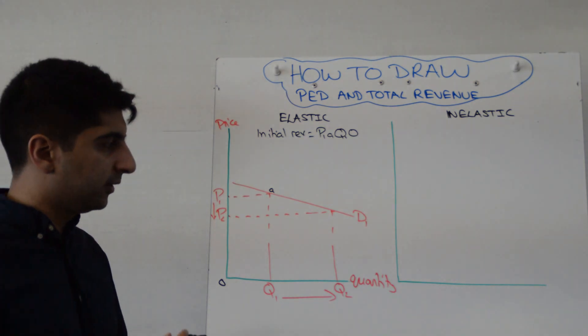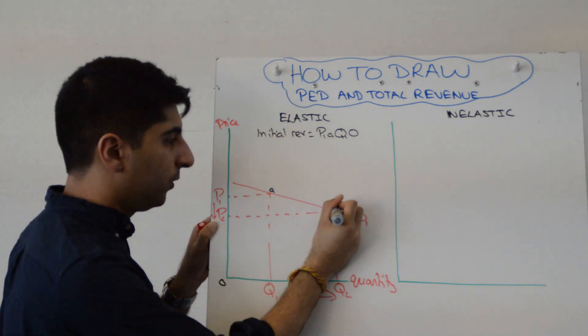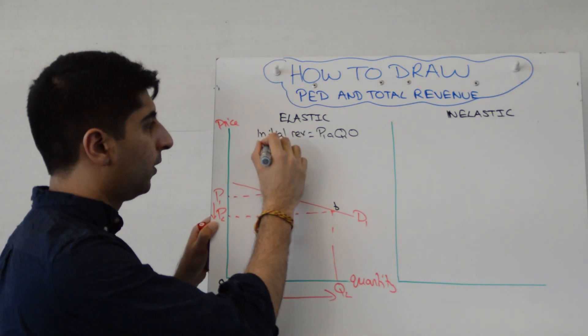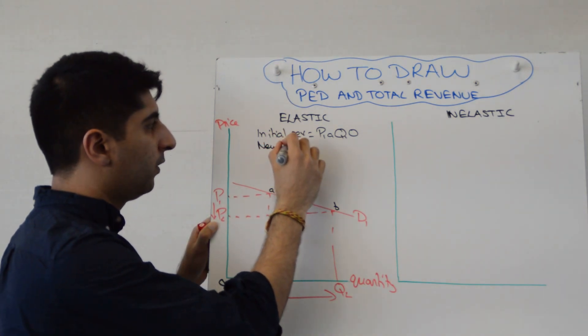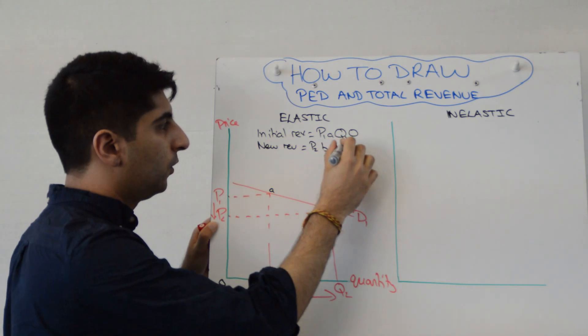Whereas new revenue is now price times quantity, P2, B, Q2, 0. So new rev is P2, B, Q2, and 0.